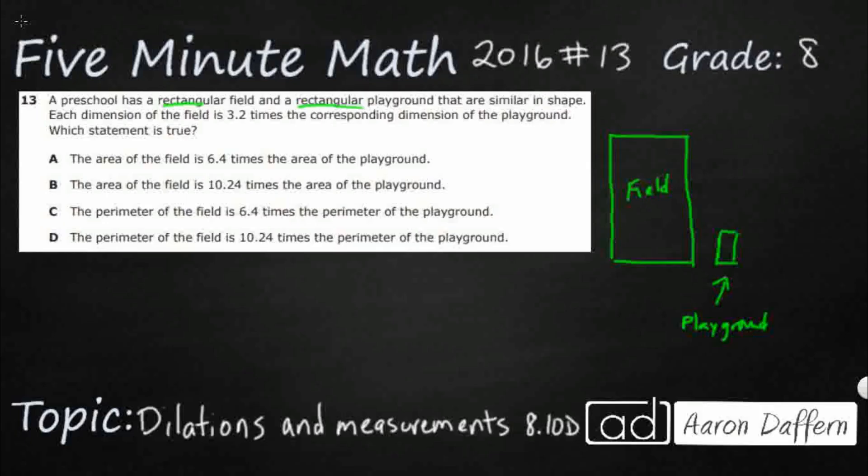Since these are rectangles, we need to find the statements about the area and the perimeter. Well, it says each dimension of the field is 3.2 times the corresponding dimension of the playground. So let's make this easy. Let's put some numbers in here, but let's make it as easy as possible. Let's say it's one. So we've got a base of one. So my field is going to be 3.2 times one. So that's just going to be 3.2.